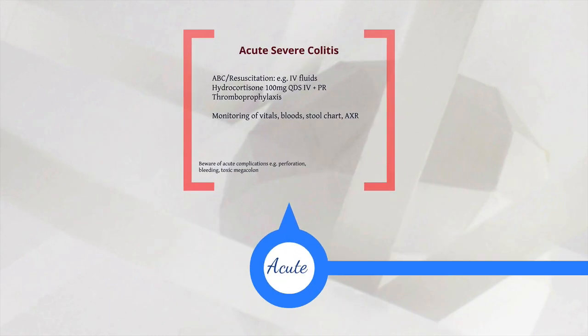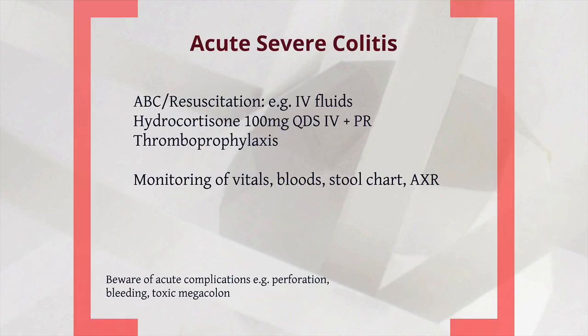For acute severe colitis — perhaps graded using the Truelove and Witts criteria — treat this like any medical emergency: take an ABC approach with resuscitation and particularly IV fluids, as these patients may be very dehydrated. Control systemic and local inflammation using hydrocortisone, given both IV and PR. Also consider thromboprophylaxis. After admission, monitor vitals, do regular bloods, maintain a stool chart, and perform abdominal X-rays looking for toxic megacolon.